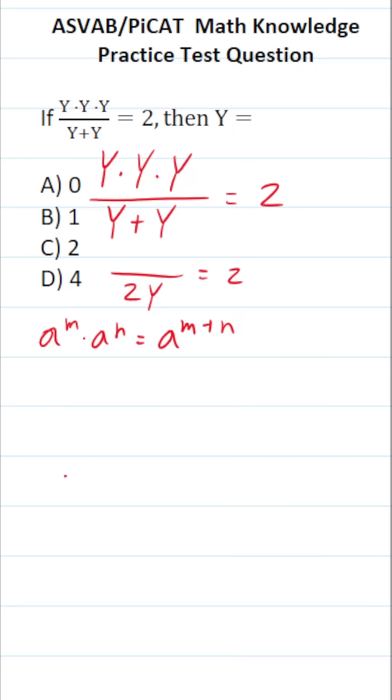And what do we have here? These are all technically to the first power. So we have y to the first power times y to the first power times y to the first power. So this is going to be equal to y to the 1 plus 1 plus 1, which is the same thing as y to the third power.